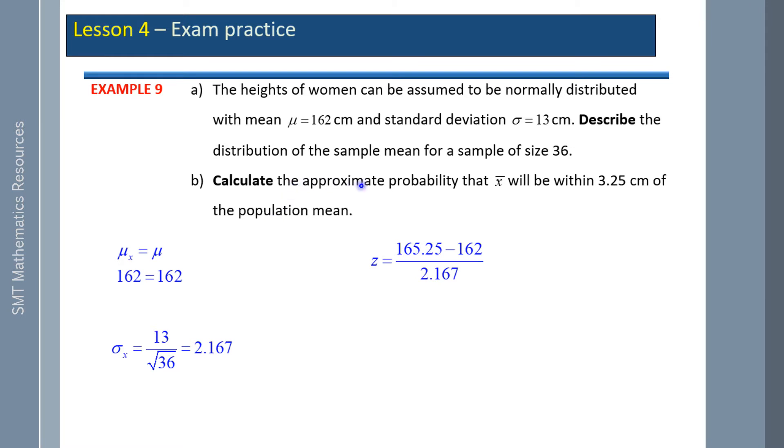To calculate the probability that x will be within 3.25 centimeters of the mean, we go above 3.25, which is 165.25 centimeters, take the mean divided by the standard deviation. It's a z-score of 1.5. Using technology and z-scores, the probability that z-score lies between 1.5 and negative 1.5 standard deviations is 86.639 percent.